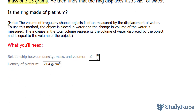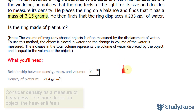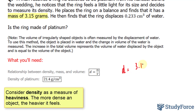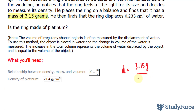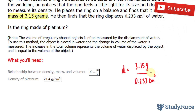We know what the mass is — it's 3.15 — so density is equal to 3.15 grams over the volume that it displaces, which is 0.233 centimeters cubed. Notice that both of these numbers have three significant figures, and since we're dividing these two numbers, we should also end up with a number that has three significant figures.